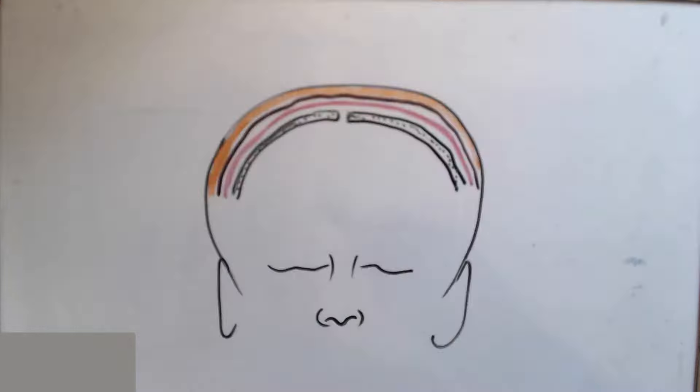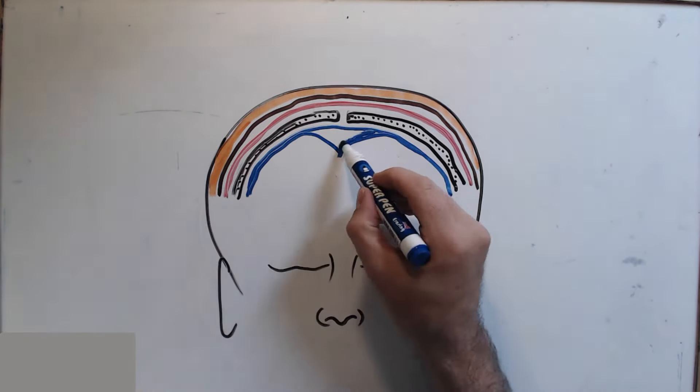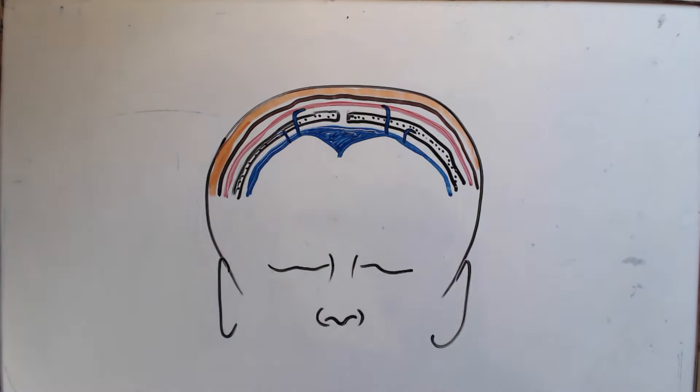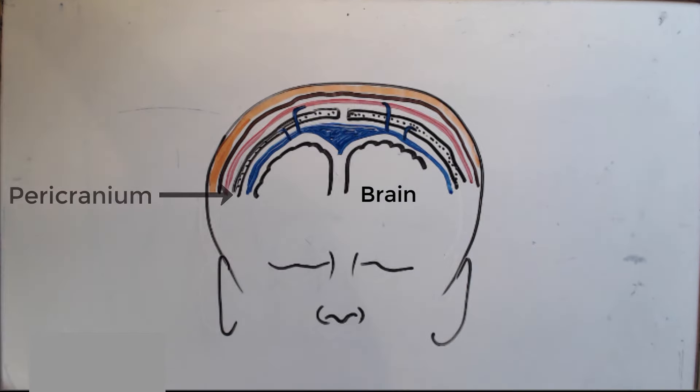Surrounding the brain are five layers. The first layer is the pericranium or the periosteum of the cranial bones. The pericranium is loosely attached to the surface of the bones of the cranium whilst being firmly adherent to the sutures themselves. The second layer is one of loose connective tissue.